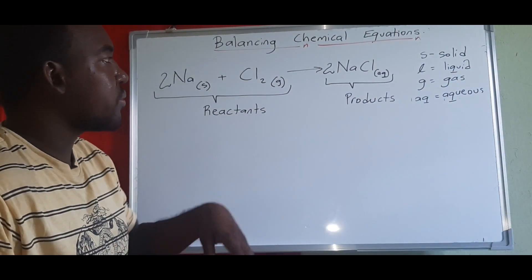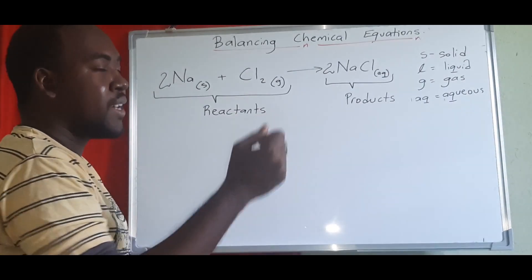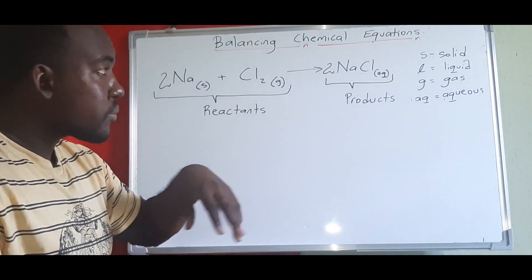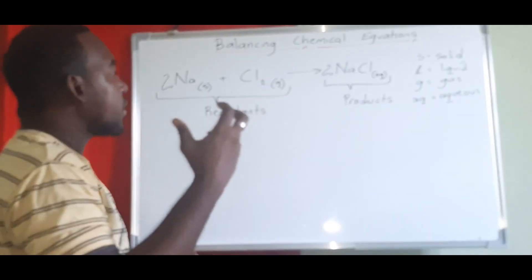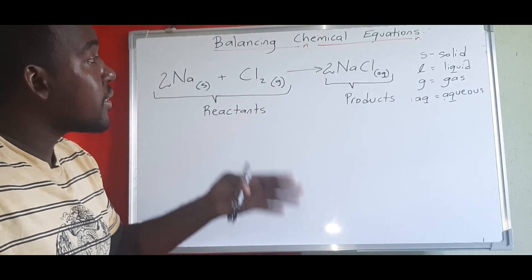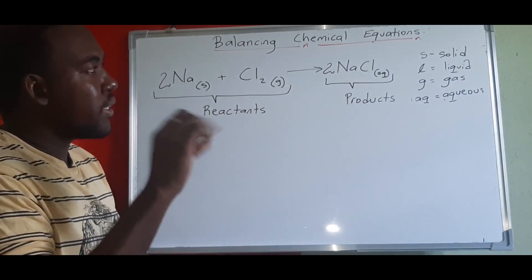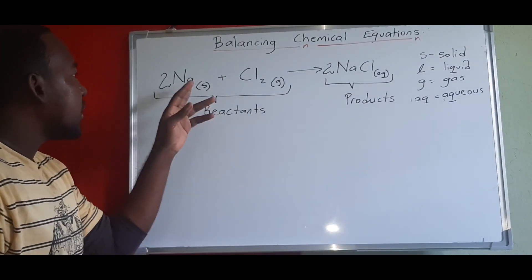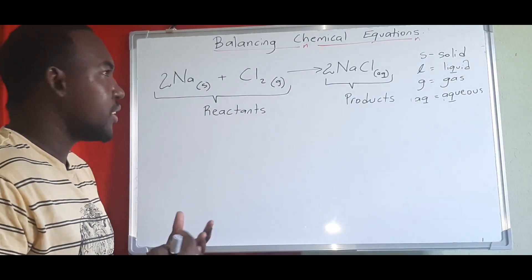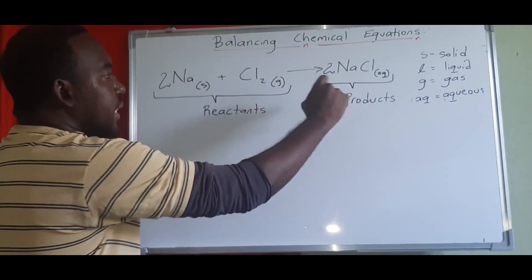Aqueous represents solutions — anything that is dissolved in water is in an aqueous state. For sodium chloride, which is table salt, we get a liquid dissolved form rather than crystals, so it's aqueous. Liquid state is for compounds like water or ethanol. Gas means we get fumes coming off in a gaseous state. Solids normally apply to metals, since metals exist as just their chemical symbol, as well as some compounds that are in a solid state.